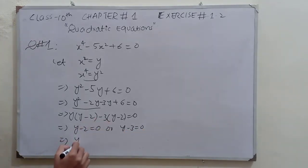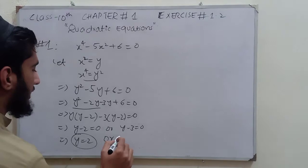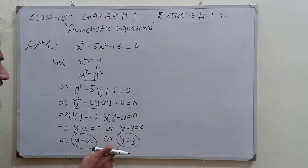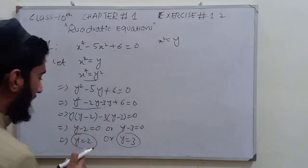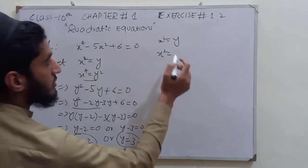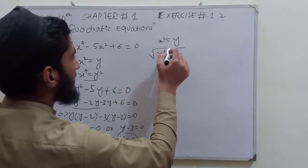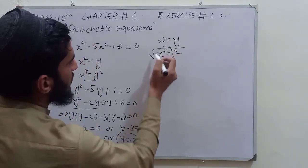Shifting terms, we get y equals 2 and y equals 3. But we are not interested in the value of y because the given equation is in the variable x. So we put these two values back into the substitution x² equals y. Putting y equals 2: x² equals 2, so taking the square root of both sides gives x equals plus or minus root 2.